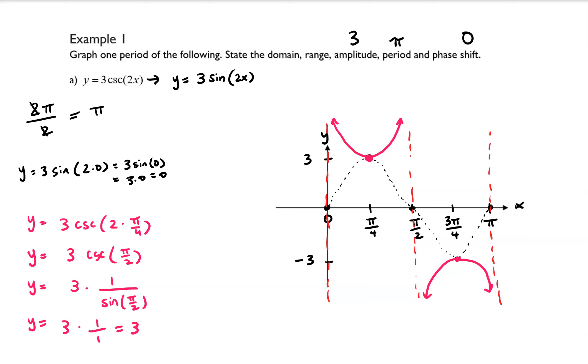Let's go ahead and fill out the domain and range. So the domain, as you'll notice there is a vertical asymptote at 0, pi over 2, pi, 3 pi over 2, 2 pi.